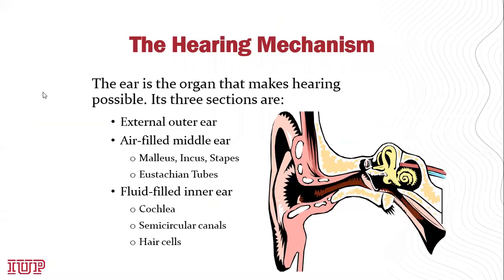Moving on to the anatomy of the ear. There are three sections: the external or outer ear, the middle ear, and the inner ear.